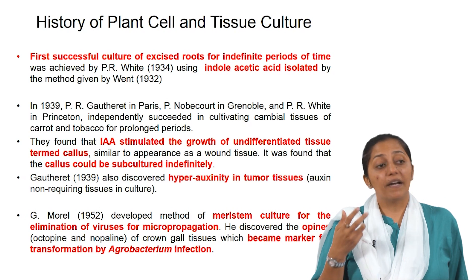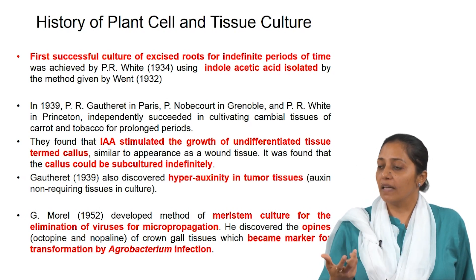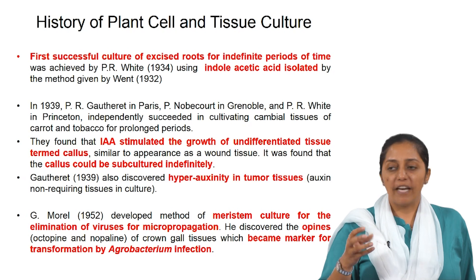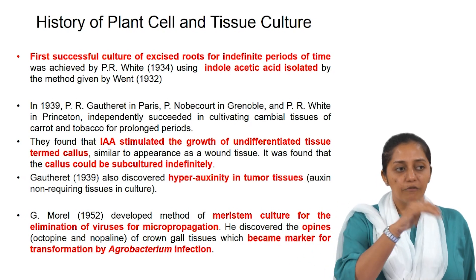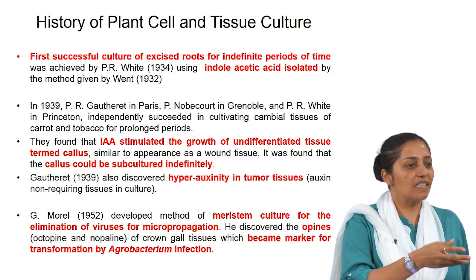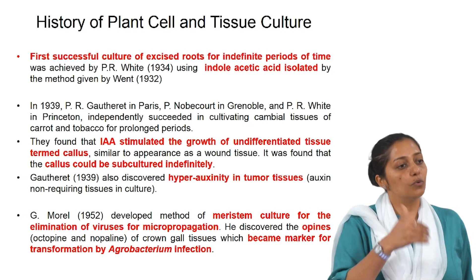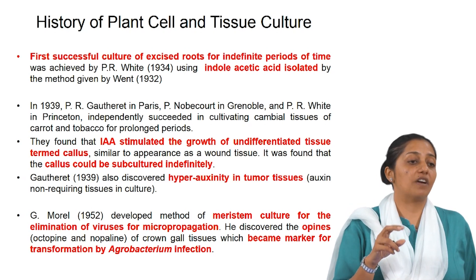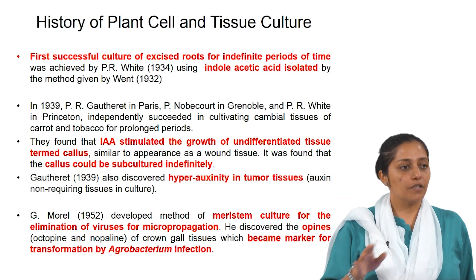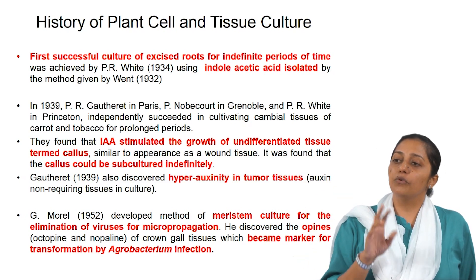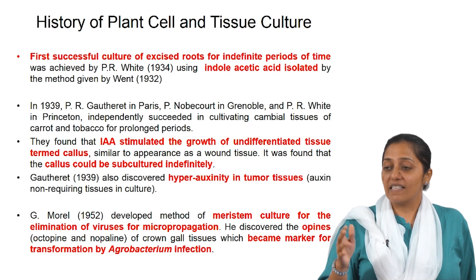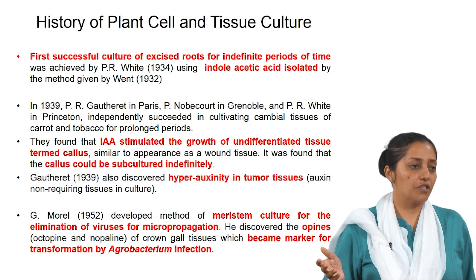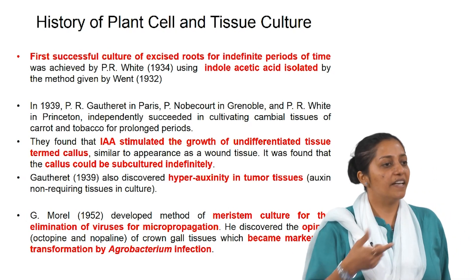Somebody also found opines present in these crown galls. Opines act as carbon and nitrogen sources for the bacteria. When present in the bacteria they are not expressed, but once the bacteria infects a plant cell, the opines get expressed and start forming, which the bacteria then utilizes as a food source. Initially, because opine expression was transient, opines were even used as markers for testing successful transformation. Later, more foolproof confirmation came through PCR to verify whether T-DNA integration had occurred.